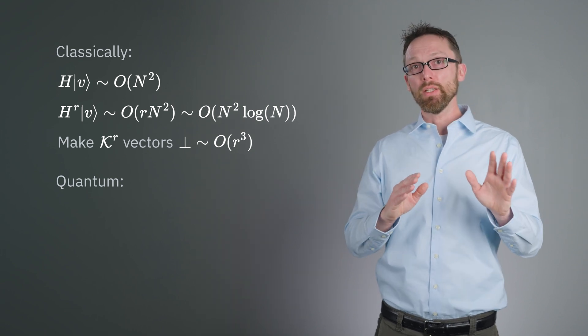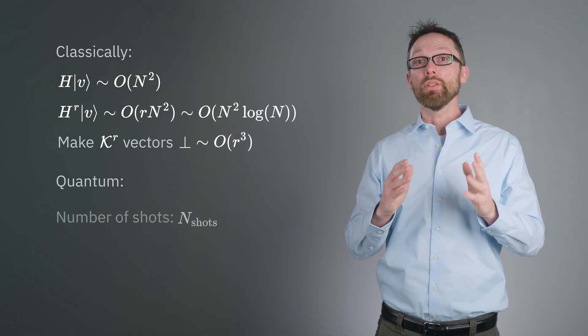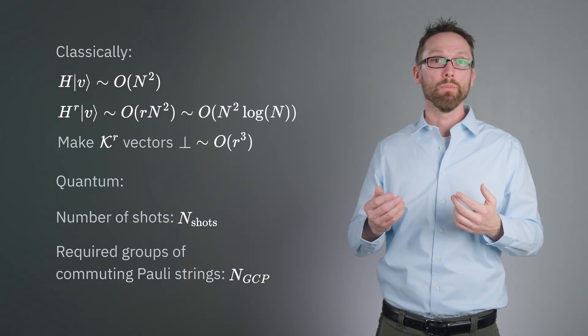Quantum computing allows us to change what attributes of the problem determine the scaling of the time and resources required. Instead of dependence on matrix size n across the board, we'll see things like the number of shots, and the number of non-commuting poly terms that make up a Hamiltonian. Let's explore how this works.